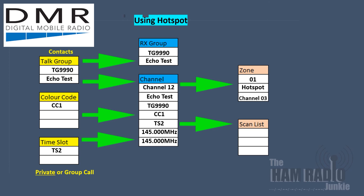Now the operator wants to set up their radio so they can hear their own transmission coming back on the echo test server. To do this, they've set the talk group at talk group 9990, colour code 1 to access the hotspot, and this time it's on timeslot 2. The other important thing to notice is it's now a private call, as it doesn't want to be transmitted to the wider network so everybody can hear it. Moving across, the data is transferred into the receive group and the channels, and then again into the zone and the scan list.